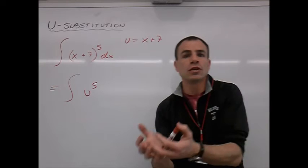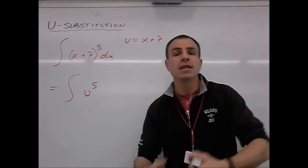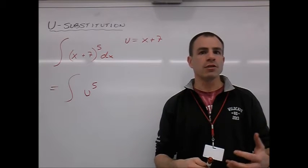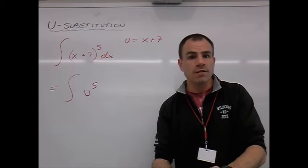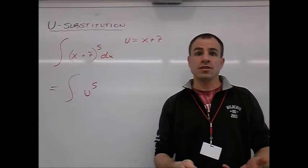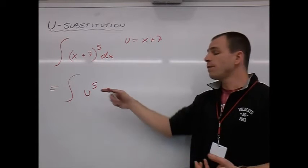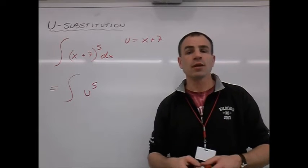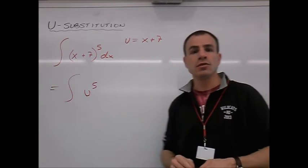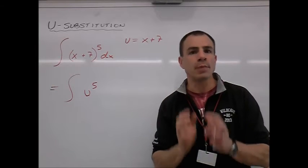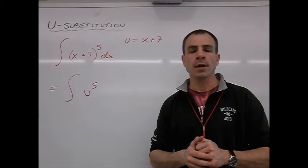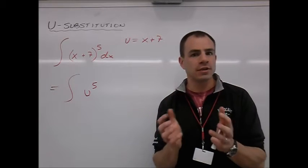That works for us because we can anti-derive u to the fifth in the same manner that we can anti-derive x to the fifth. If x to the fifth becomes x to the sixth over sixth, then u to the fifth will become u to the sixth over sixth. So we're just doing a nice basic substitution here so that we can use our basic anti-derivative rules. We have a couple of issues that we have to deal with, though.